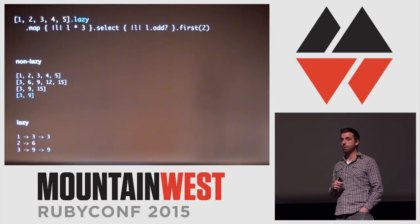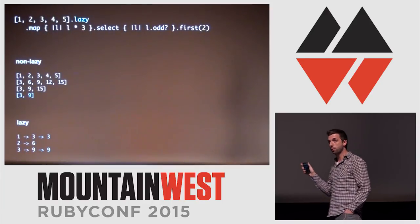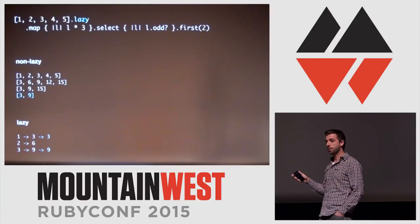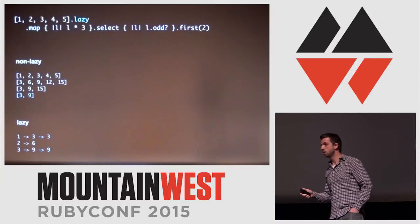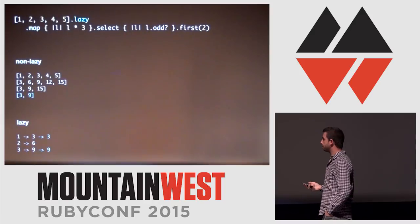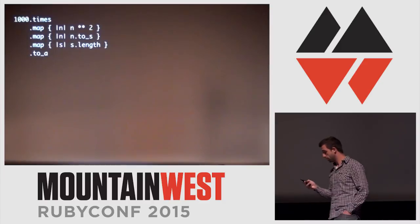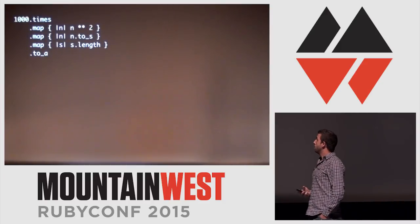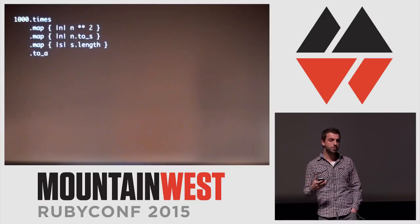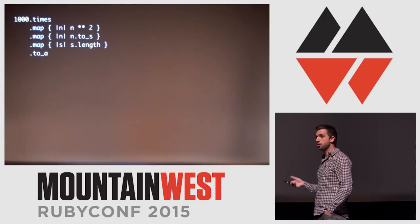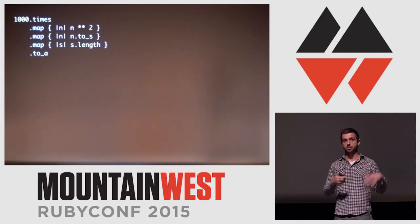That's where lazy comes in. The lazy form only does three things: it takes 1 and runs it all the way through adding it to the result, then takes 2 which doesn't pass the select, then takes 3 and puts it in the result, then stops. Four and five never have to happen. Let's look at what happens with Enumerable::Lazy: a thousand times we map something to the second power, turn them to strings, take the length of those strings, then turn it into an array — we need the to_a because lazy doesn't execute until it has a terminating piece.